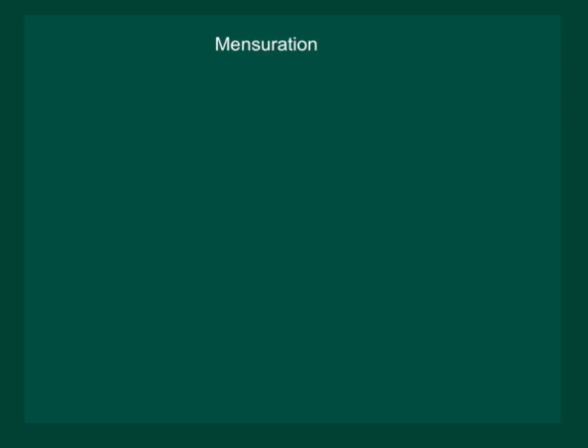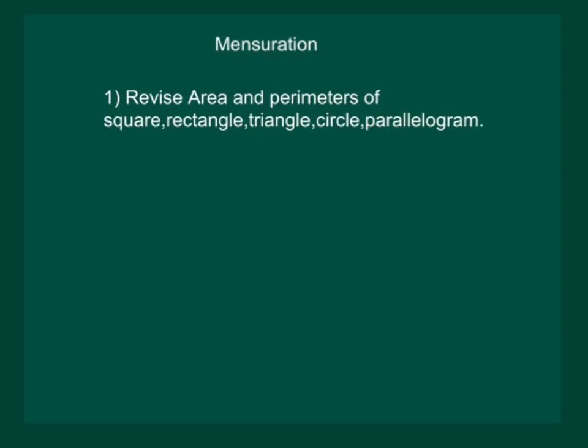Let us start with this very interesting chapter on mensuration. Firstly, we will revise area and perimeter of square, rectangle, triangle, circle and parallelogram.